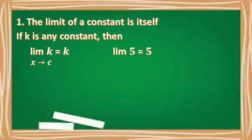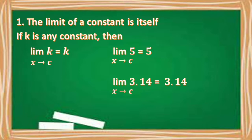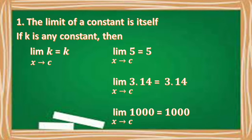For example, the limit of 5 is equal to 5 as x approaches c. The limit of 3.14 equals 3.14 as x approaches c. The limit of 1,000 equals 1,000 as x approaches c.